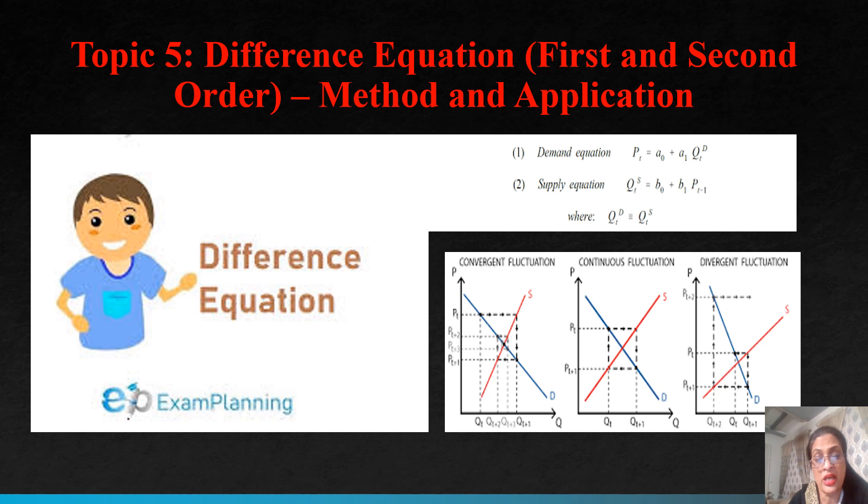Then we will work out the economic model, and the first economic model which we learn with the difference equation is cobweb model. It's very interesting. You must have seen that in your microeconomics courses, you just make supply and demand and they interact and equilibrium is there. Once there is any change, shift in demand for example, you have another equilibrium and you just move from one point to another point. But in reality, it's not like that.